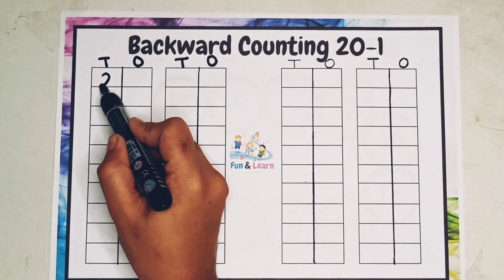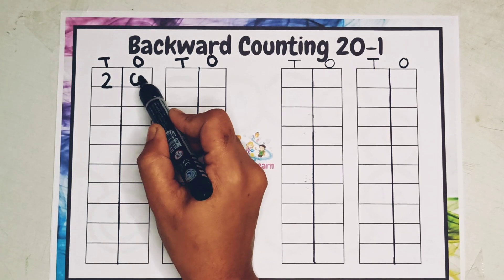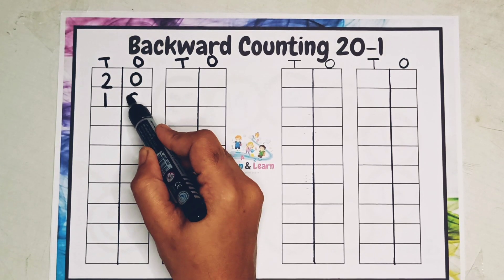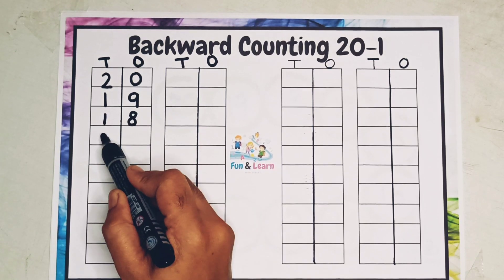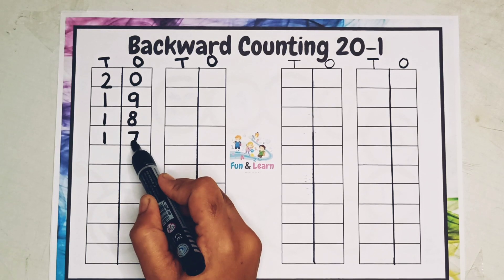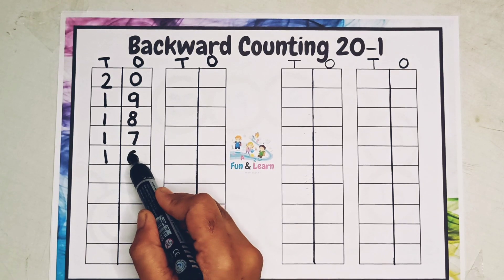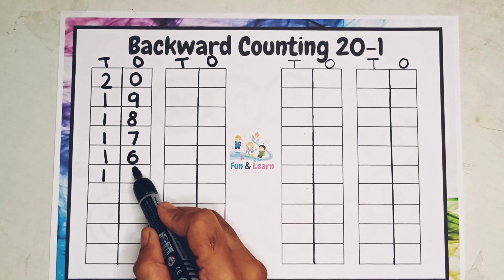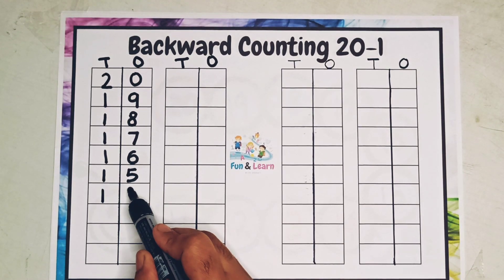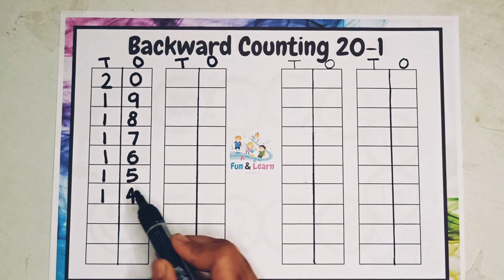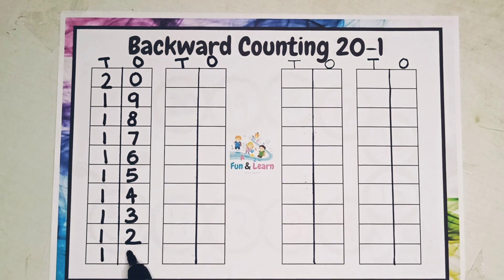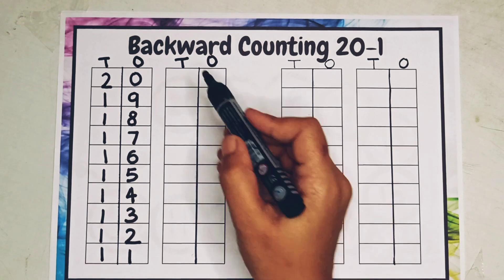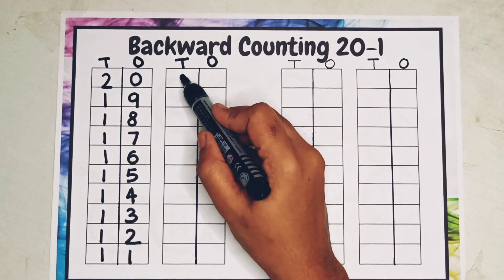we start like this: 20, 19, 18, 17, 16, 15, 14, 13, 12, 11.